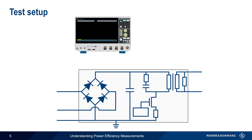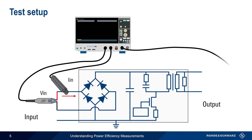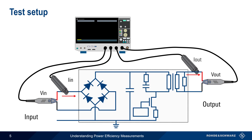Let's take a graphical look at power efficiency measurements. On the input side, a voltage probe – often a differential probe – is used to measure input voltage, and a current probe also measures the input current. Similarly, on the output side, a second pair of voltage and current probes is used to measure the voltage and current at the output. As can be seen in this illustration, power efficiency measurements therefore require a total of four oscilloscope channels.